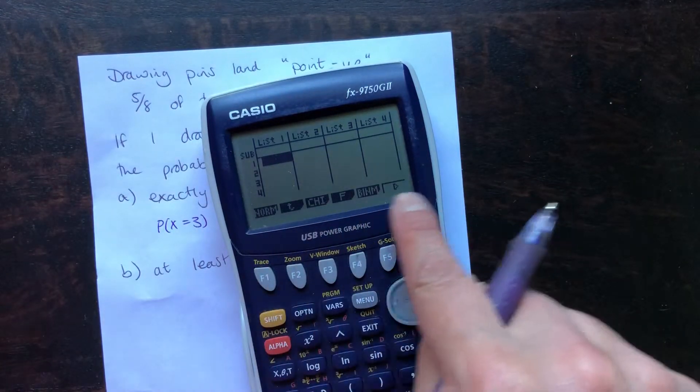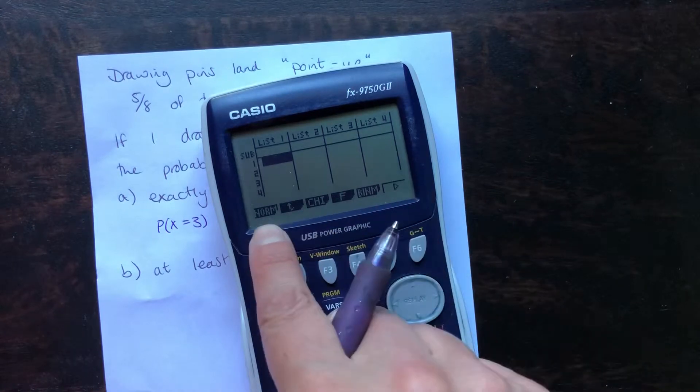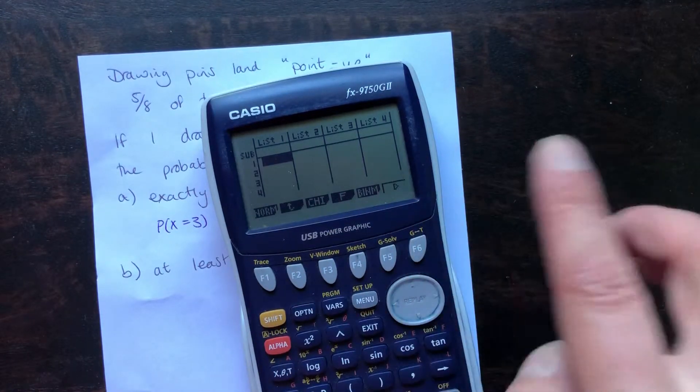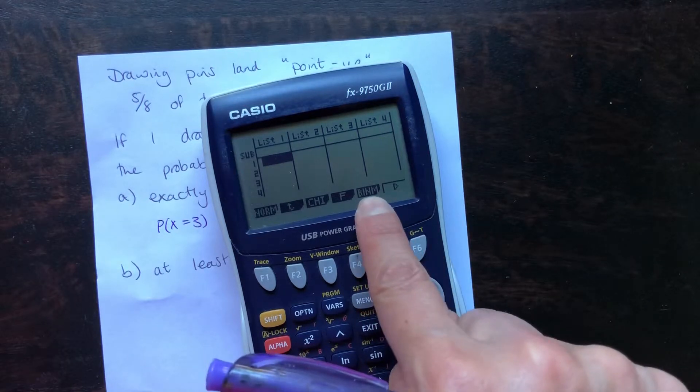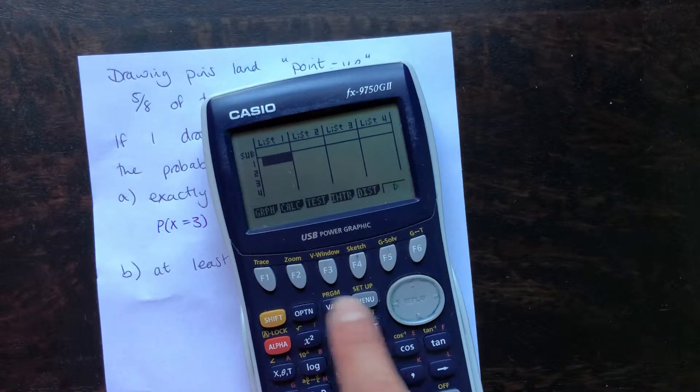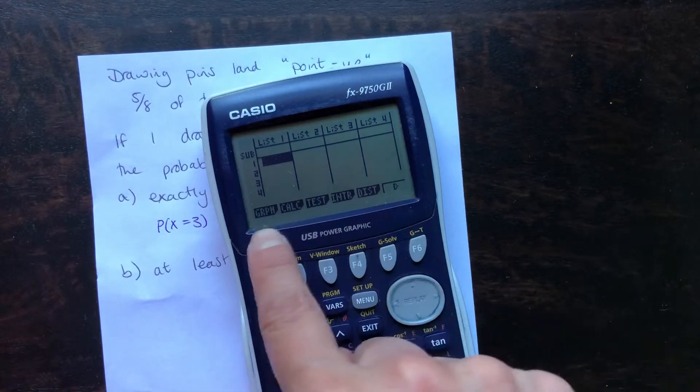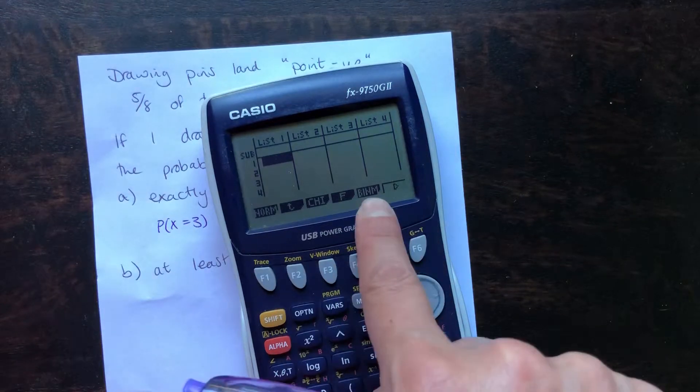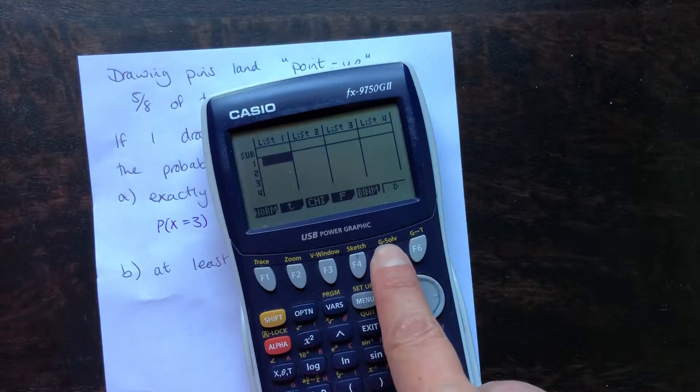Your options along the bottom here will come up with your different things. There's a video about normal distribution, and there will be one about Poisson as well, but this time we are going for binomial, which is right here. If it wasn't there in the first instance, you might need to just scroll along, or perhaps select distributions first, and just work through those menus until you find what you need.